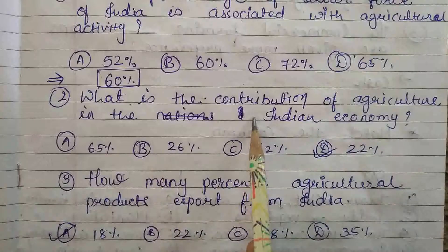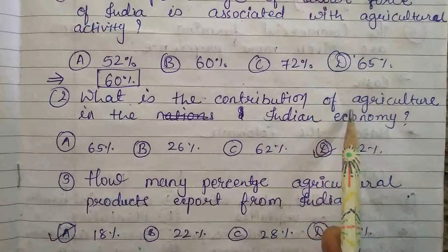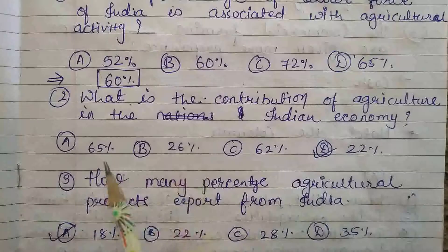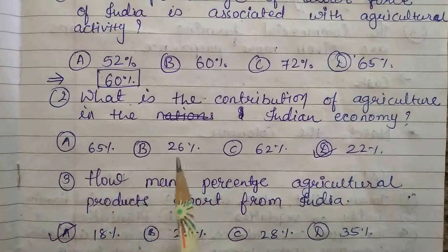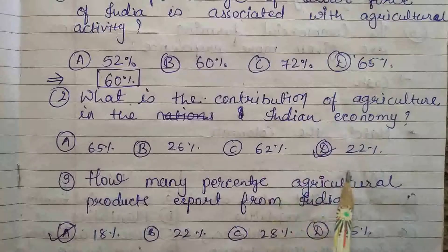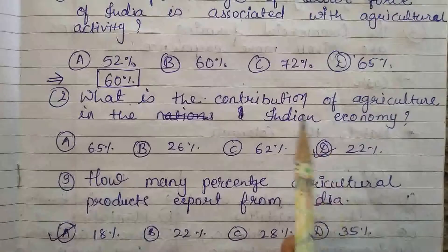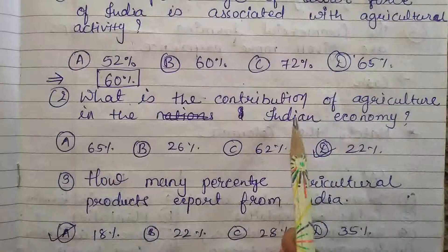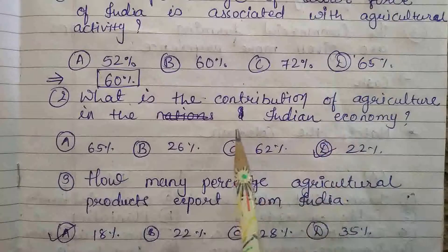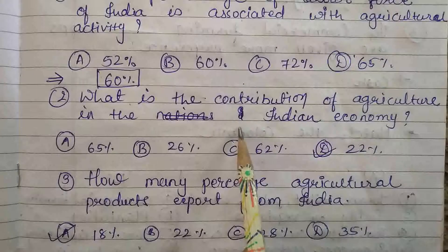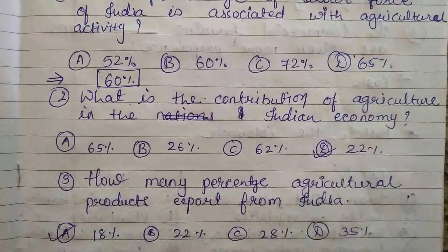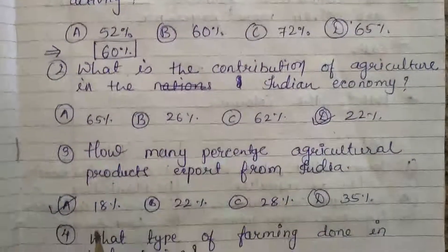The next question: what is the contribution of agriculture in the Indian economy? Options are 65%, 26%, 62%, and 22%. Bharat ki Indian economy mein agriculture se kitna contribution milta hai — the answer is 22%.